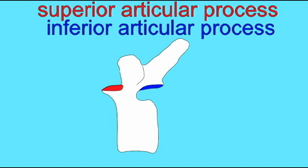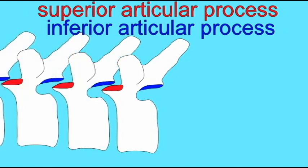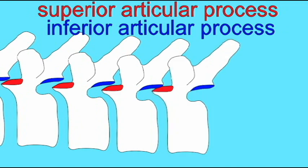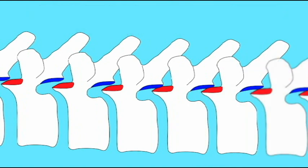Also, there is a connection between the bodies of adjacent vertebrae. The joints between the articular processes are synovial joints because they have a joint capsule, and diarthroses because they allow for free movement. More specifically, they are planar joints which allow for a gliding movement.